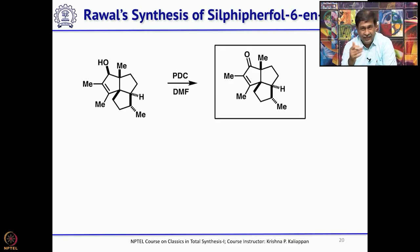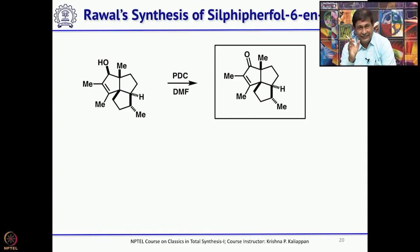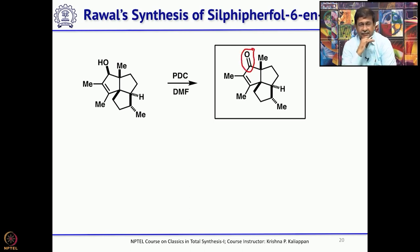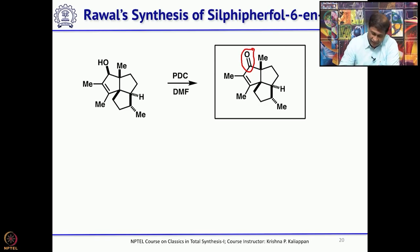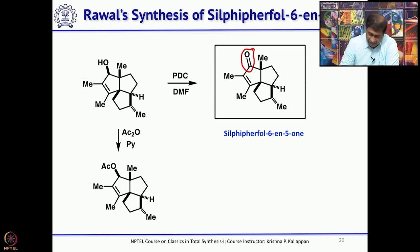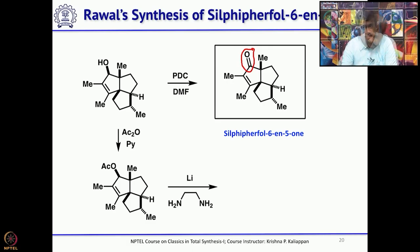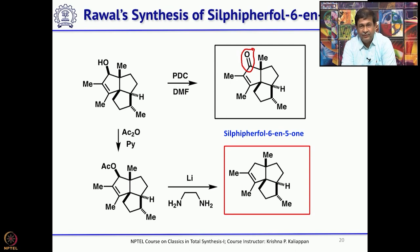For the other natural product — sylphi-perfol-6-ene, without the carbonyl group — the carbonyl group needs to be removed. Several conditions were tried but all gave poor yield plus a complex mixture. So he used a two-step process: first he acetylated the allylic alcohol to give the corresponding acetate, then treated with lithium in 1,2-diaminoethane, which gave the other natural product, sylphi-perfol-6-ene.